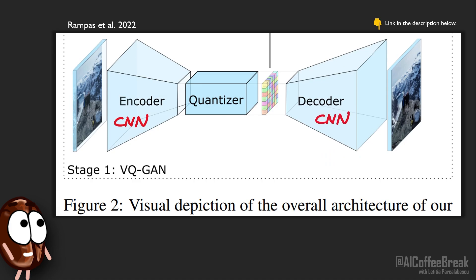Then a decoder neural network, also CNN based in this case, takes the lower dimensional representation and reconstructs the image. The encoder and decoder are trained together in this image reconstruction setting.